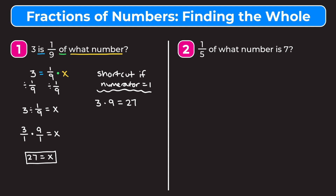Let's jump into example two: one fifth of what number is seven. We're going to set up an equation for this one. The wording is a little different but the problem is very similar. We have one fifth, and remember 'of' means multiplication, so one fifth times what number — that's x — is always means equals, and seven is just a number so we leave it as is. So our equation is one fifth times x equals seven.